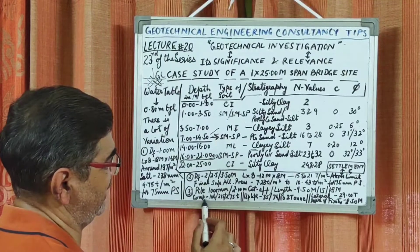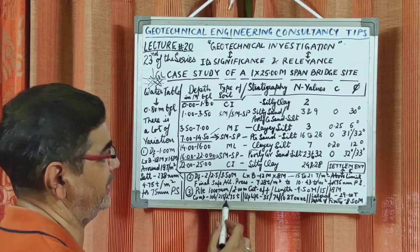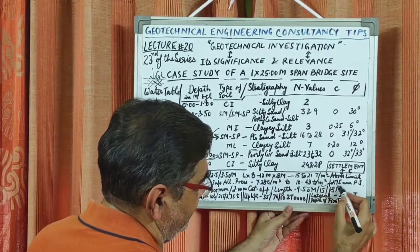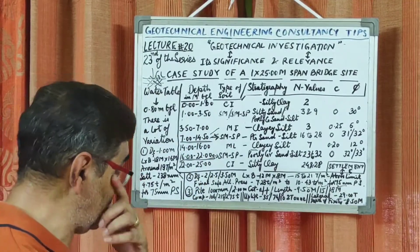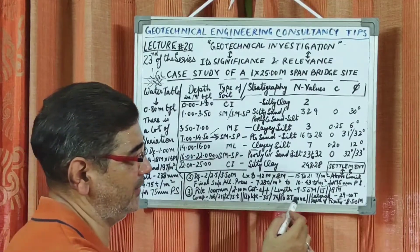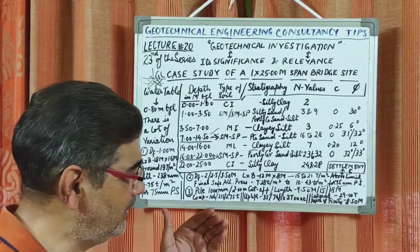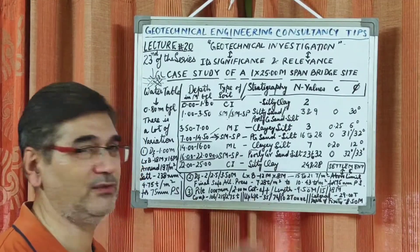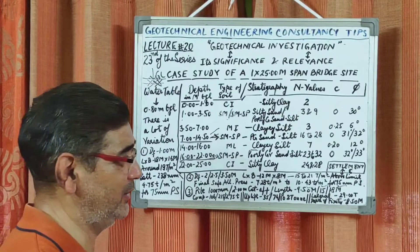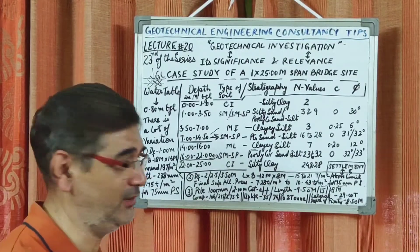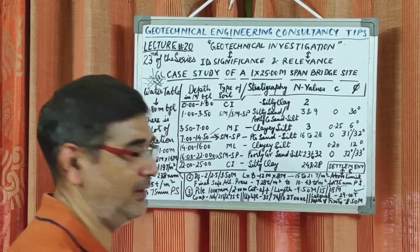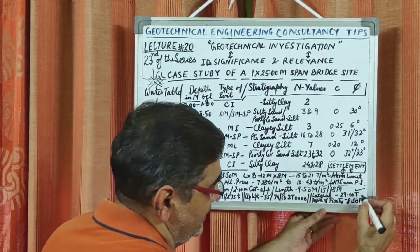The compression capacity of the pile was found to be of the order of 116 tons, 215 tons, and 275 tons for the three respective depths. Correspondingly, the uplift capacity of the pile was found to be of the order of 35 tons, 74 tons, and 102 tons. We also calculated the lateral capacity of the pile as well as the depth of fixity. All these calculations were done presuming the grade of concrete to be used in the pile foundation as M35. The lateral capacity was found to be 29 tons and the depth of fixity is 8.50 meters.